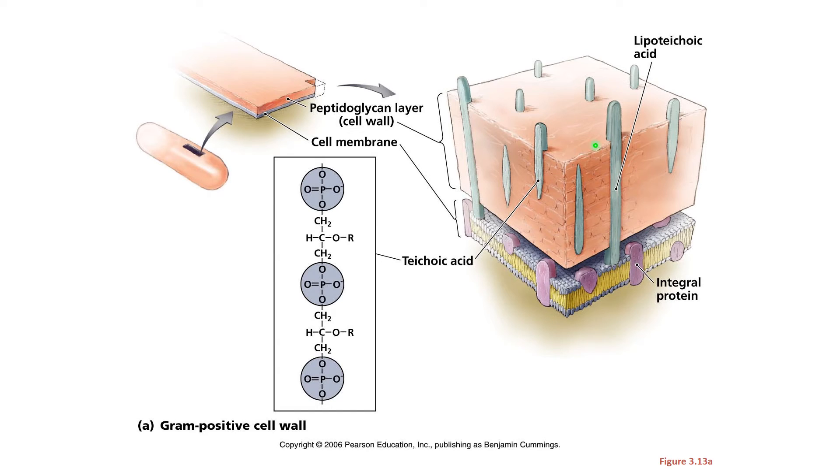Because gram-positive bacteria have a thick peptidoglycan layer, they retain the primary dye in the gram stain, crystal violet. For more about the gram stain, please watch my Tiny Teach on the gram stain.